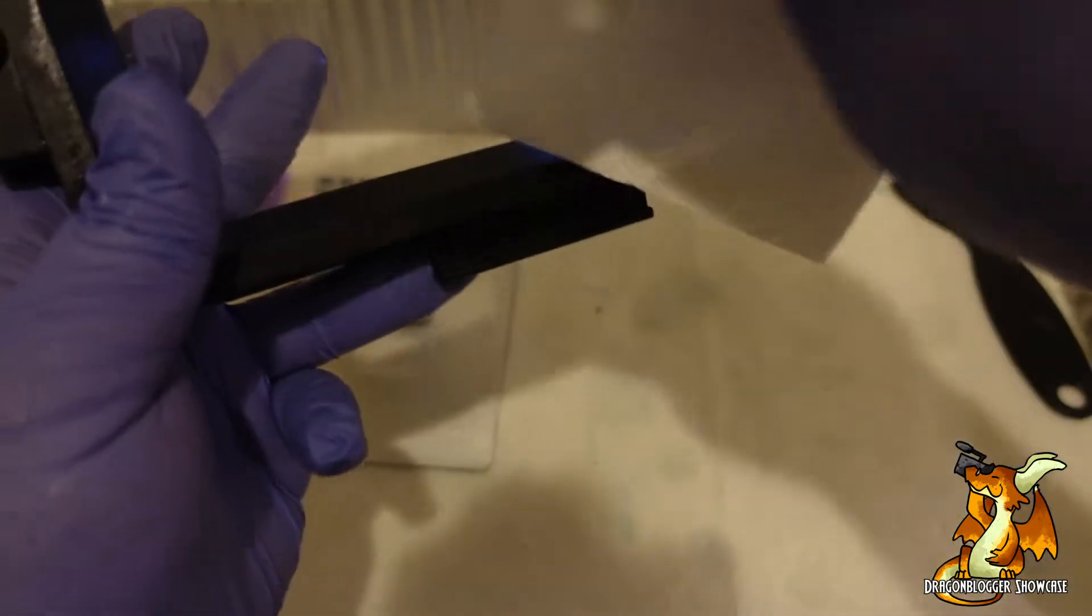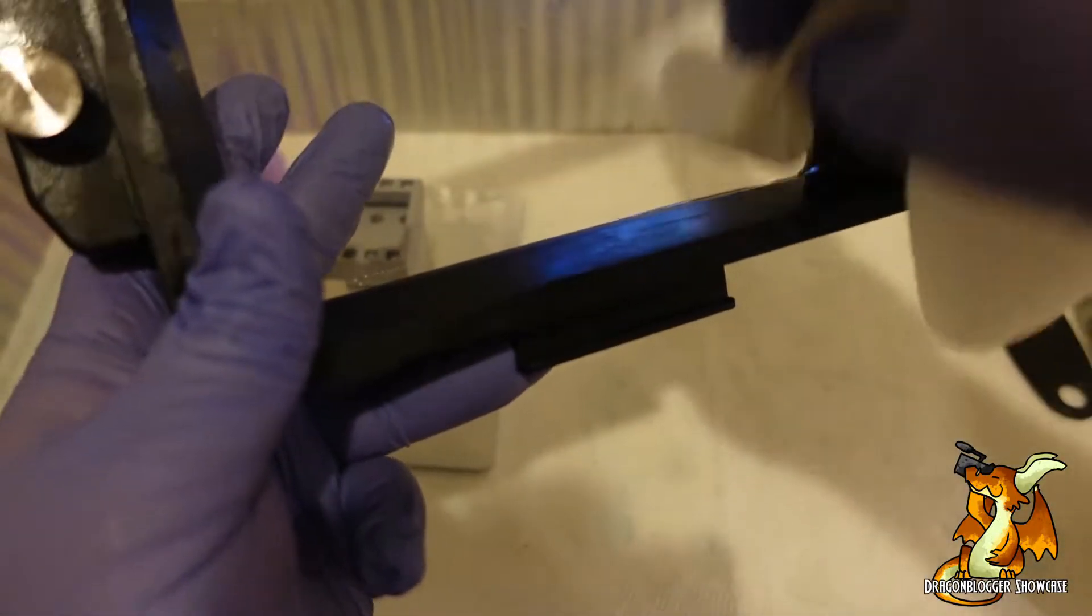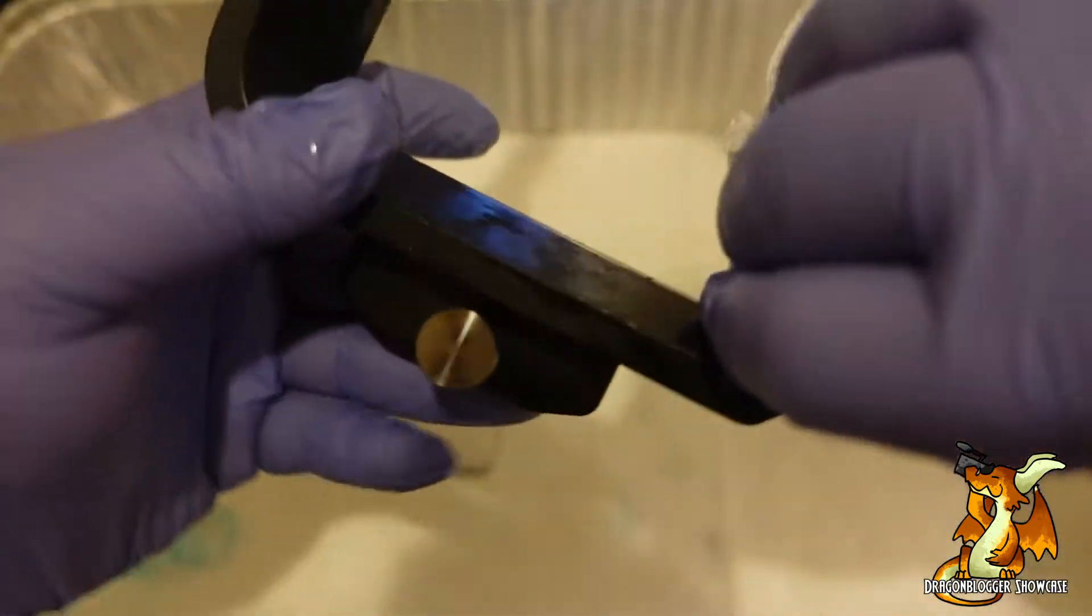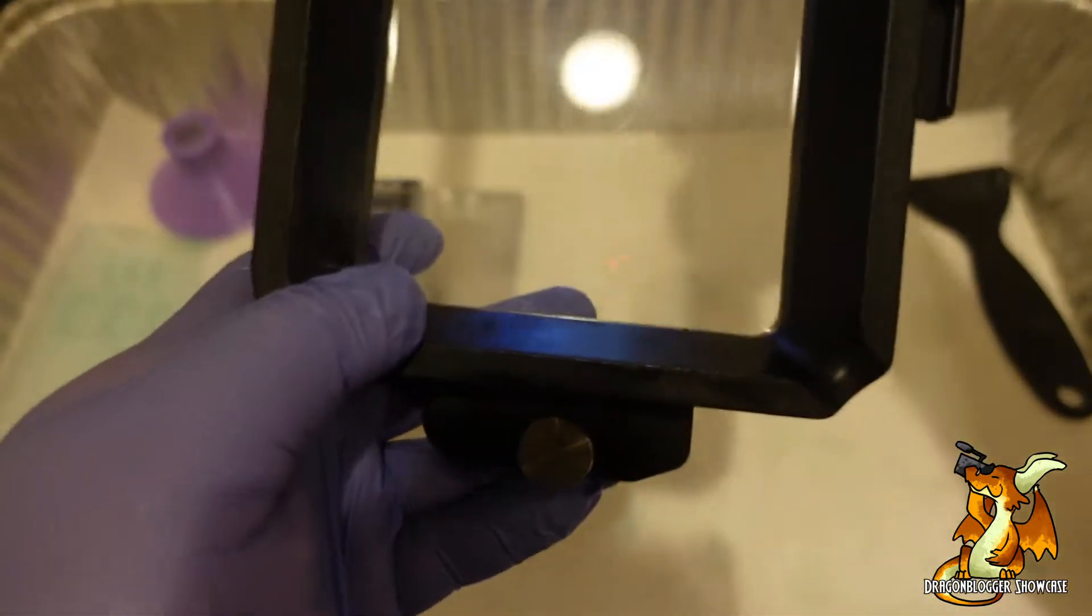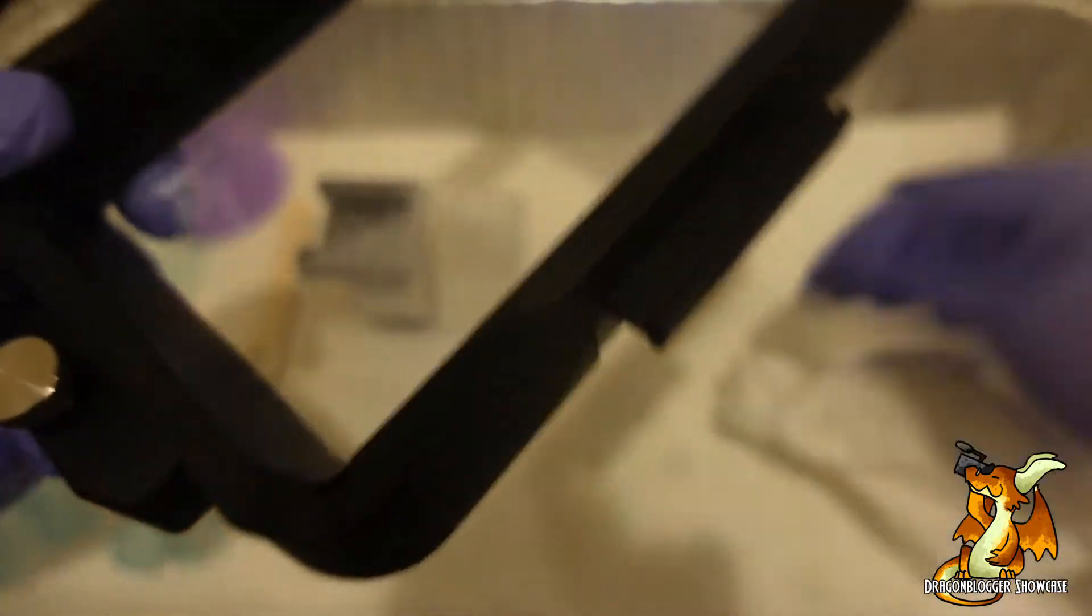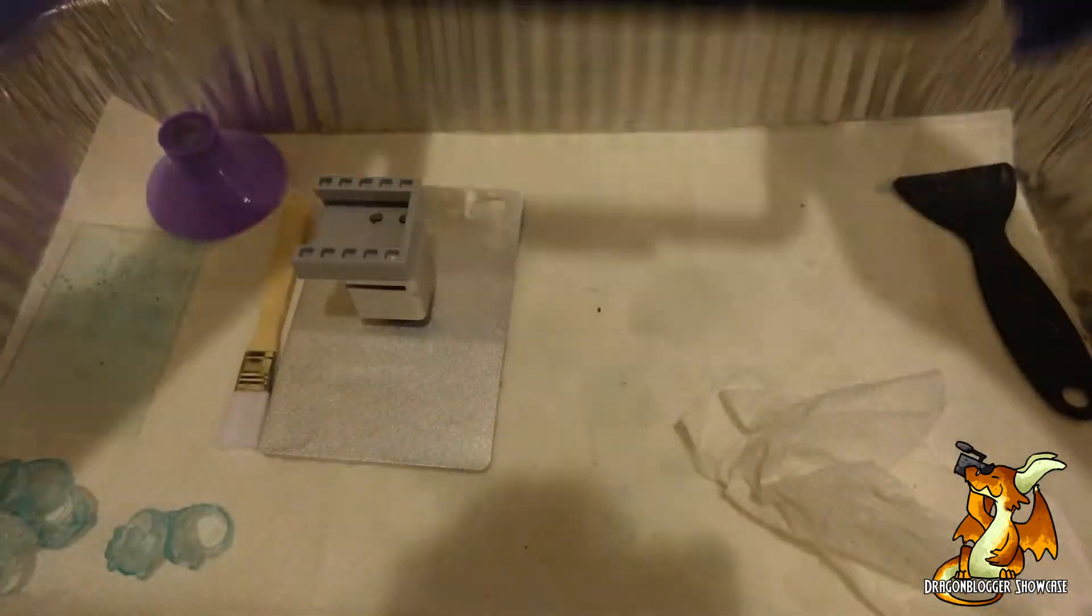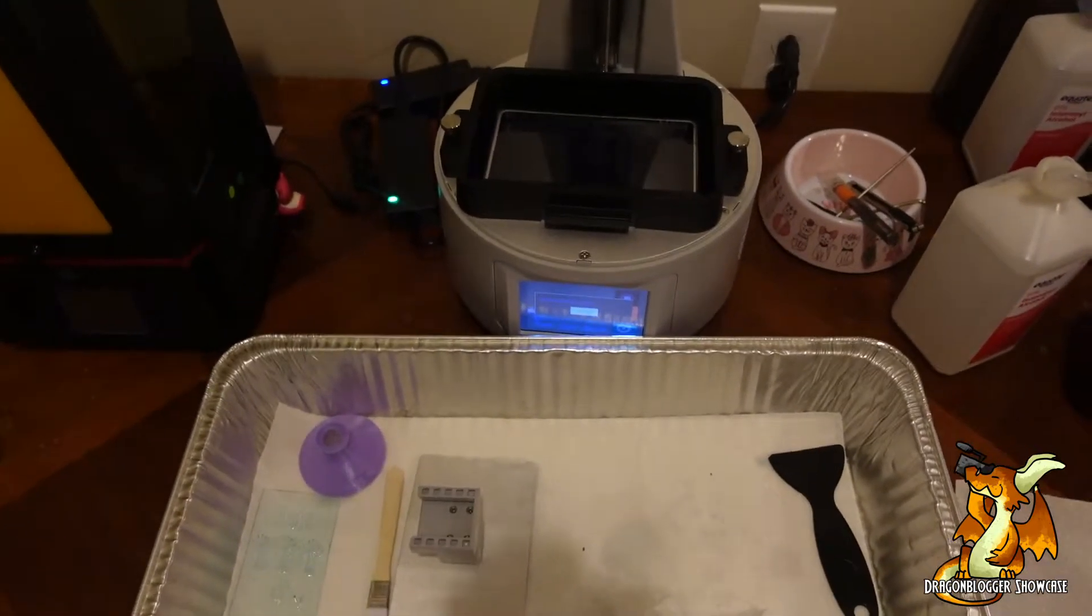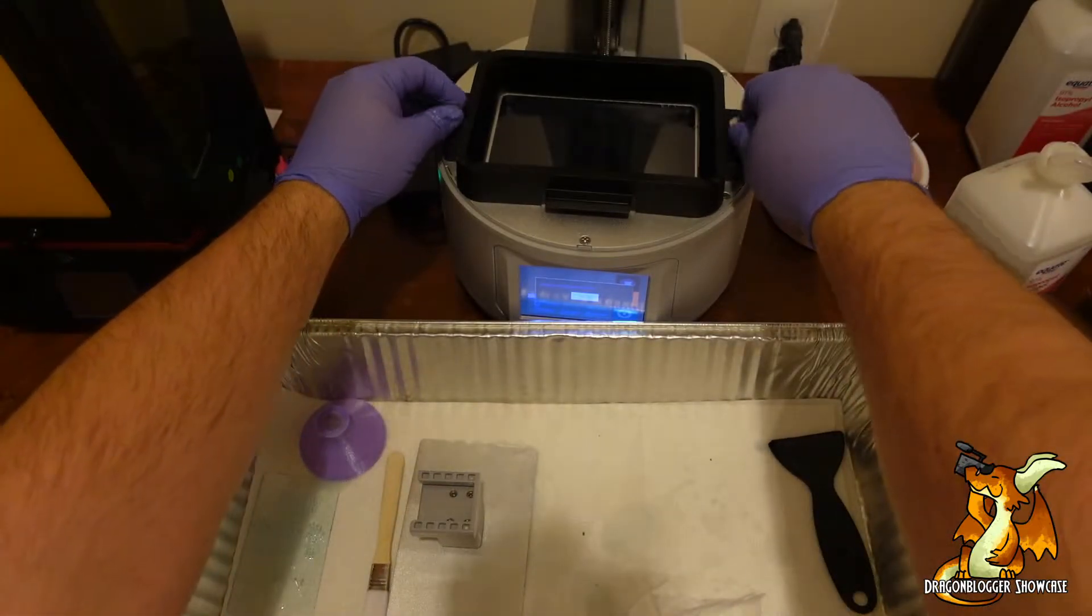Microfiber will scratch your FEP film less. I treat FEP film as a consumable anyway, so I'm going to replace it. I'm not going to worry about the cleaning material as much. And this will just get screwed back onto the build area right here.